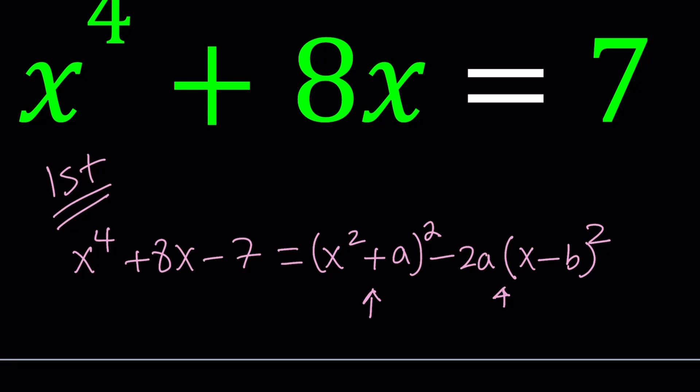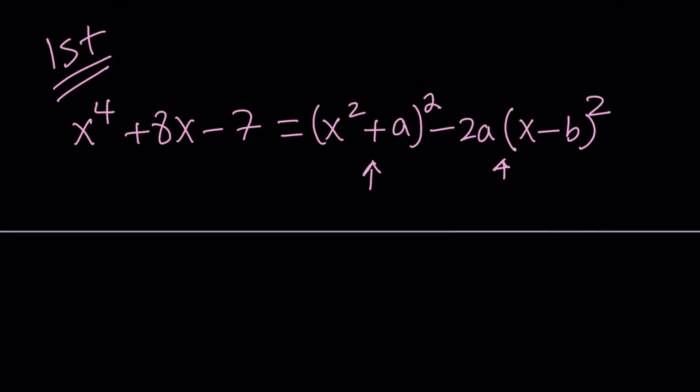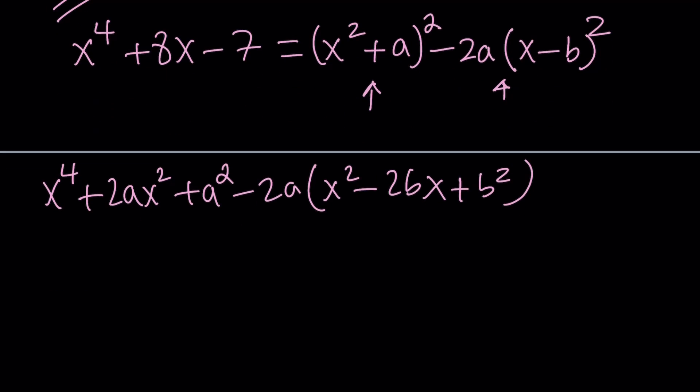Expand it. You're going to get x to the fourth plus 2ax squared plus a squared, and then minus 2a times x squared minus 2b, x plus b squared. If you distribute, you're going to get x to the fourth power plus 2ax squared plus a squared minus 2ax squared plus 4abx minus 2ab squared.